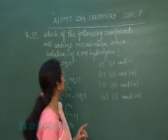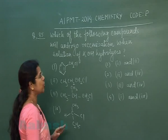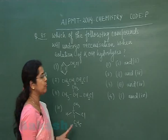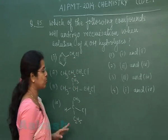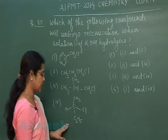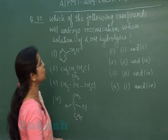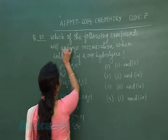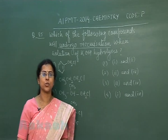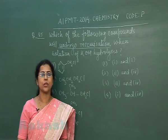Our next question is question number 85. Which of the following compounds will undergo racemization when treated with KOH hydrolysis? The first structure is benzoyl chloride, second is propyl chloride, third is isopropyl chloride, and the fourth is a chiral compound. Racemization takes place when an optically active compound reacts via an SN1 mechanism.